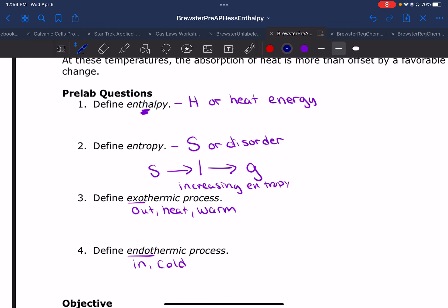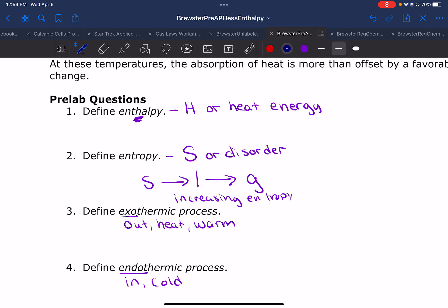Pre-lab questions, I've just summed mine up pretty quickly. Enthalpy has an H in it. That's how I remember that enthalpy symbol is going to be a capital H, and it means heat energy. Your entropy is going to be a capital S. It means disorder, and the universe prefers to be disordered because that's a low-energy thing.